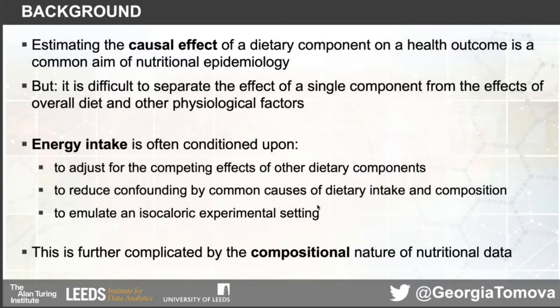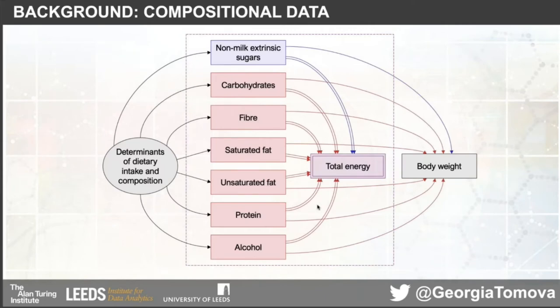This is further complicated because energy intake in nutrition is an example of compositional data. Compositional data is any data in which the different individual components together sum up to the whole or total. As shown here, we have different dietary components that all sum up to total energy intake. We can choose to break down carbohydrates further or combine saturated and unsaturated fat into one variable, but regardless, the dietary components will always sum up to total energy.